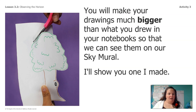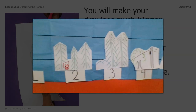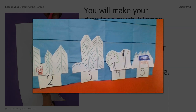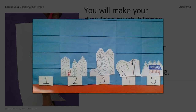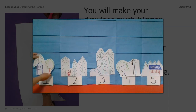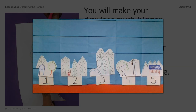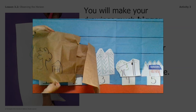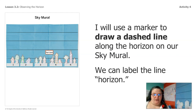I'll show you the one I made — let me move the camera. Here's the one I made. You can see I have them numbered from the different places I looked: one, two, three, four, five. I took those observations and made the pictures really big, then taped them above the numbers. Once you get your observations done of the horizon, you're going to want to make your drawings much bigger than you drew them the first time so you can see them really clearly on your sky mural. Our next step is to use a pen to draw a dashed line along the horizon on our sky mural so we can really mark out our horizon.